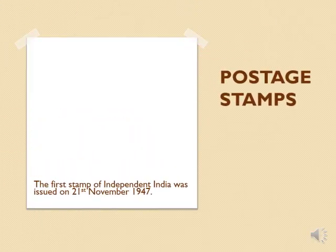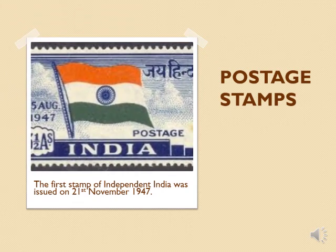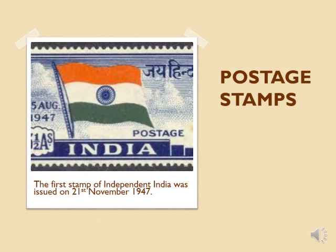Postage stamps don't reveal anything on their own, yet a historian makes them speak. The first stamp of independent India was issued on 21st November 1947. It depicts the Indian flag with the slogan 'Jai Hind' on the top right-hand corner. There have been several changes in postage stamps since India became independent. Postage stamps reveal a lot about changing times due to the variety in sizes, novelty in subjects, and color schemes. The Postal Department issues stamps on a wide variety of themes like political leaders, flowers, animals, birds, or any event. It is therefore a valuable repository of history.